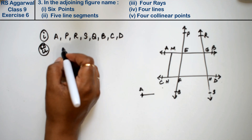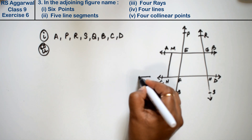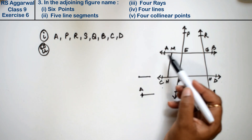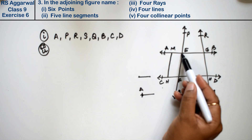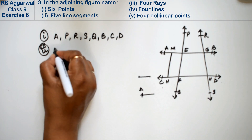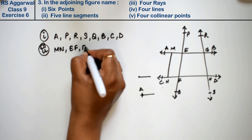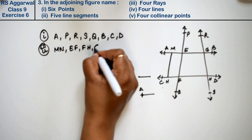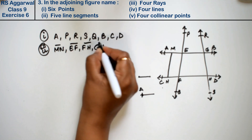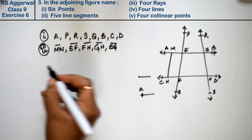Let's do the second part: 5 line segments. Line segments have two endpoints that are joined together. We can write the following line segments: EG, EF, MN, FH, and GH. Don't forget to write the line segment sign. So EG is a line segment, and similarly the others.